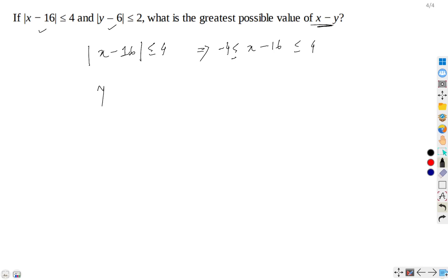Similarly, |y - 6| ≤ 2, this implies -2 ≤ y - 6 ≤ 2.